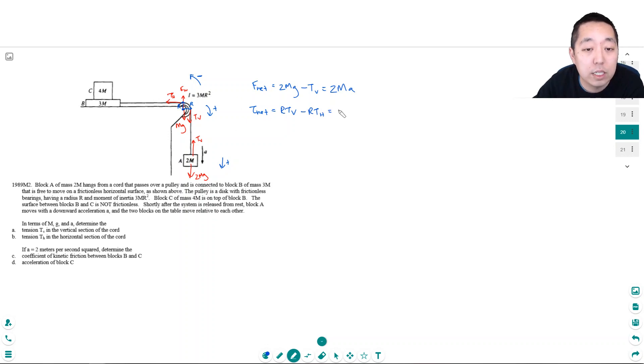The net torque equals Iα, kind of like the net force is Ma. I is equal to 3mR squared. And α is related to A because α equals A over R. This is times A over R. That cancels there. So I have R times Tv minus Th equals 3mR A. These R's cancel. So I have Tv minus Th equals 3mA.